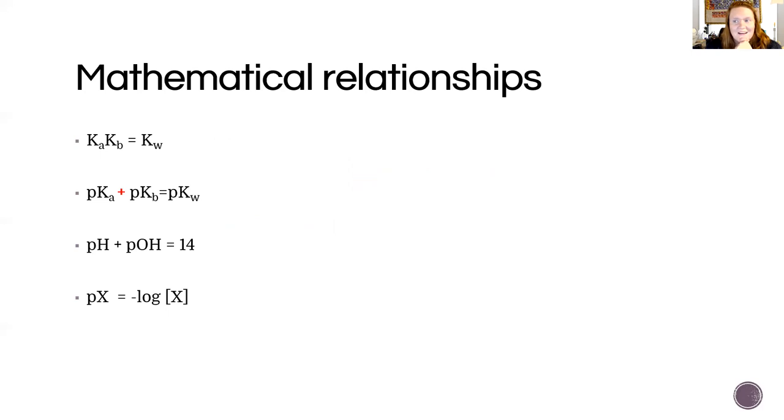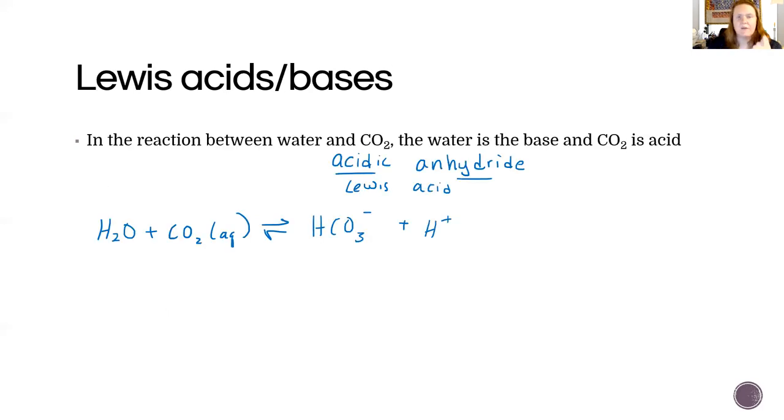Okay. All right. So also, by the way, when you think about like iron or any of those metals we looked at, they are also acidic anhydrides or Lewis acids because they have a positive charge. And you know that, of course, water has these two negative things. So in terms of the mechanism, the way that this reaction happens, these electrons are going to donate to the iron.